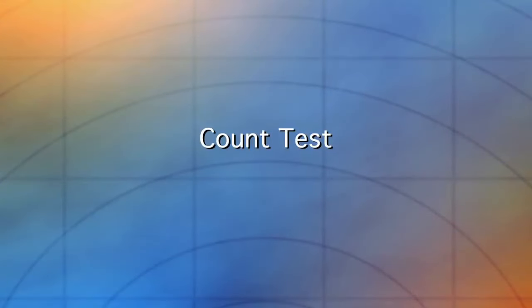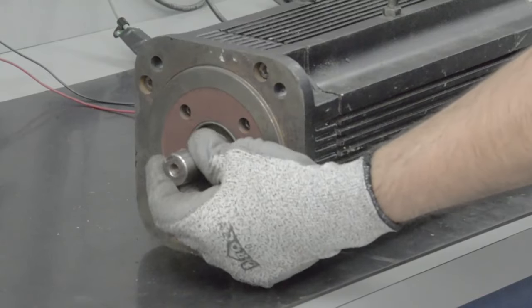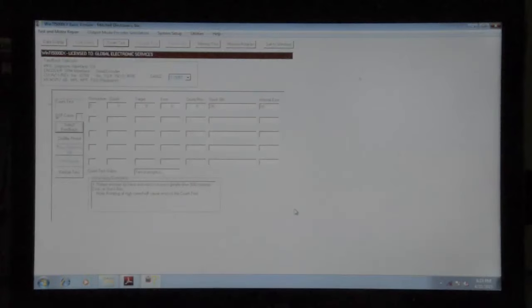Now we can proceed to the count test. To do this, we manually turn the shaft. First count, good. Second count, error. Third count, good. Fourth count, good. As you can see, the encoder has failed the count test in the second revolution.